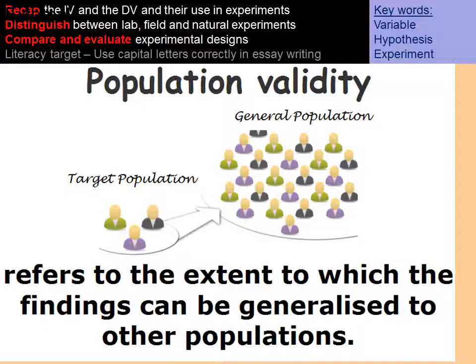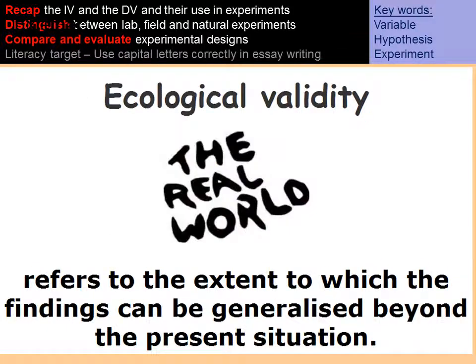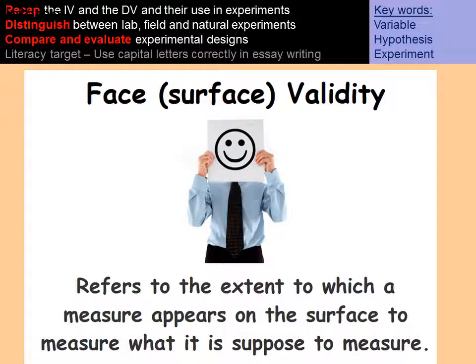Ecological validity refers to the extent to which your study applies to the real world and whether the findings can be generalized to the real world. For example, the Milgram study lacks ecological validity because it was in a lab setting and the task was unrealistic — participants were asked to administer electric shocks to another participant.